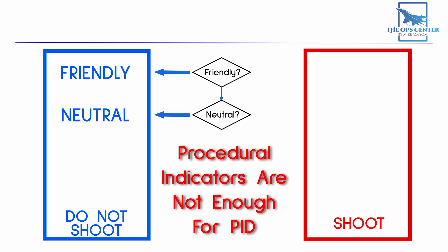Procedural indicators are not enough to be 100% sure. In other words, the best you can do here is a bandit ID. Not a hostile ID that permits an engagement.